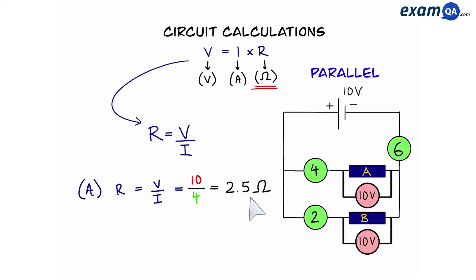That gives us 2.5 ohms. For B we're going to do the same thing, voltage over current. The voltage of B is 10 volts and the current is 2 amps. That's going to give us 5 ohms resistance. Okay now let's work out the total resistance.